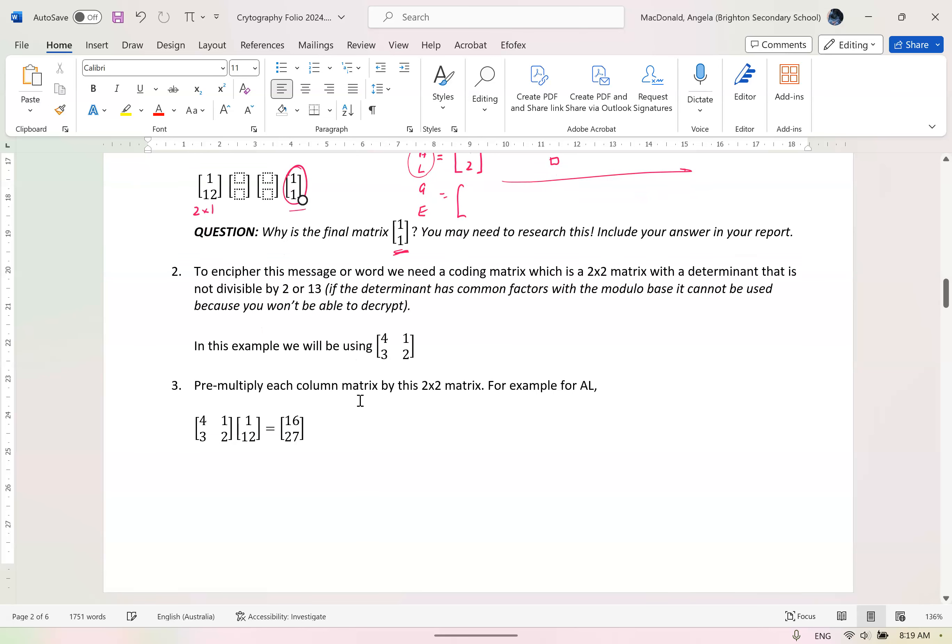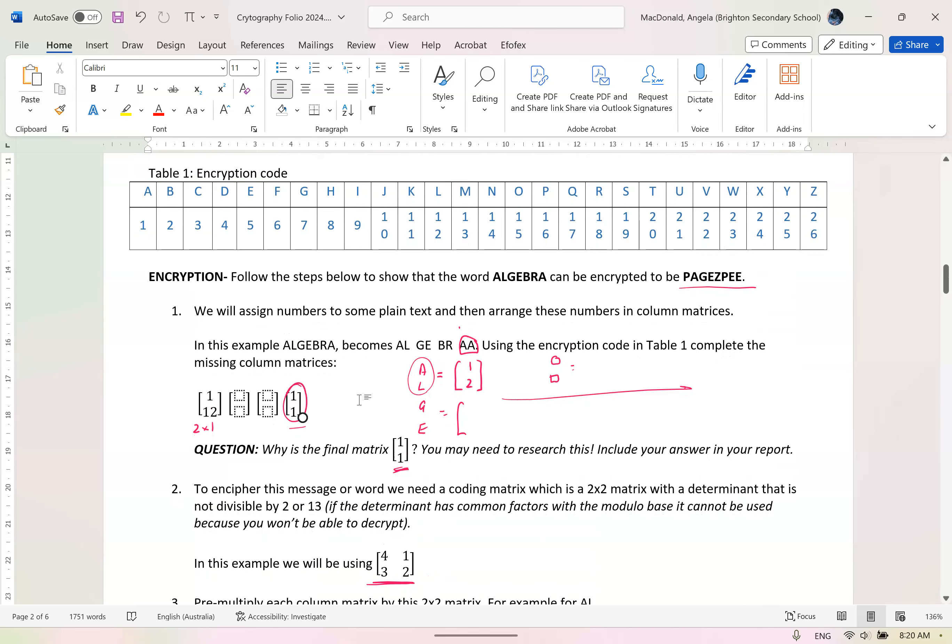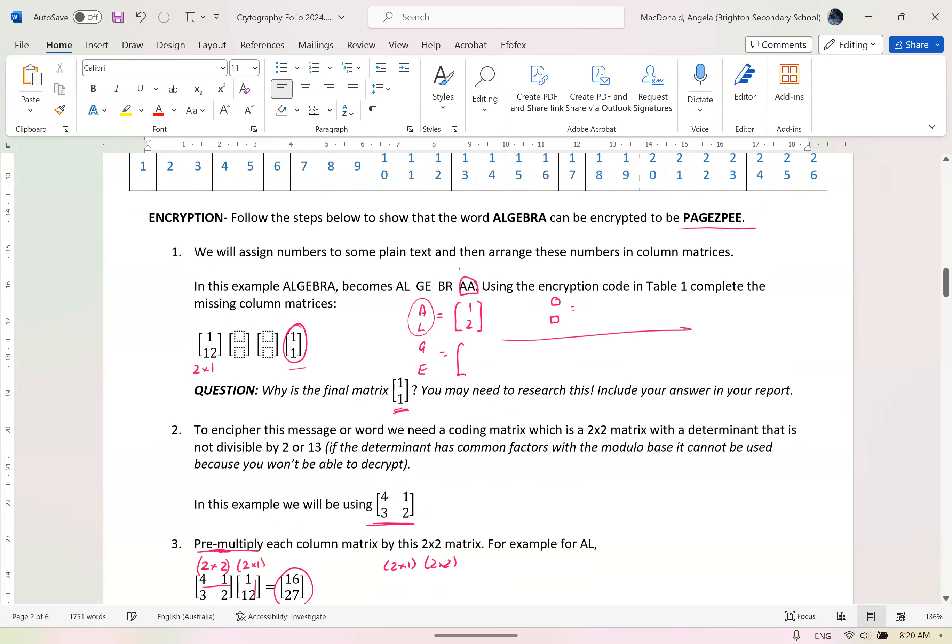But how do we make that become this? Well, we choose a coding matrix. You could call this the encipher code, the encipher matrix. And we are going to pre-multiply each of our 2 by 1 matrices by this to get a new 2 by 1 matrix. When you're explaining, you might want to say why we pre-multiply. Think about the order, so 2 by 2 and a 2 by 1. Why couldn't we do it the other way and have a 2 by 1 by a 2 by 2? Don't write me an essay on that, but do mention it.